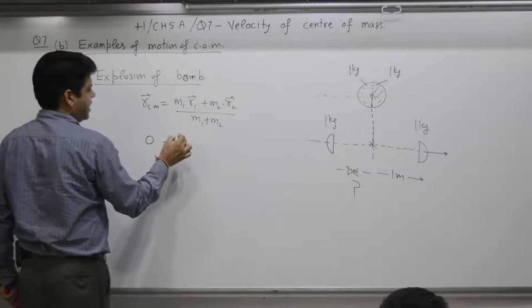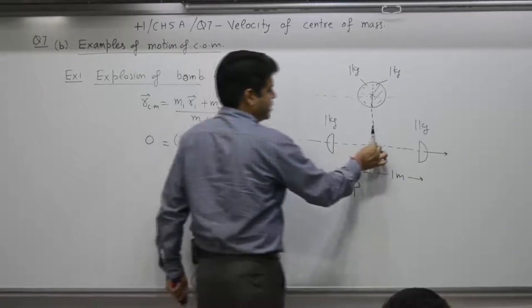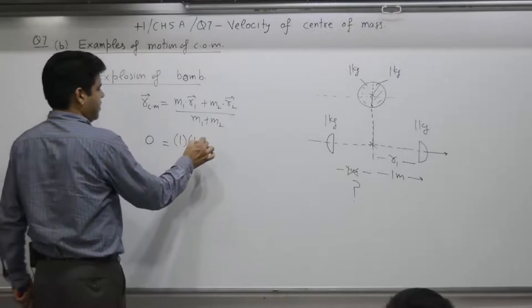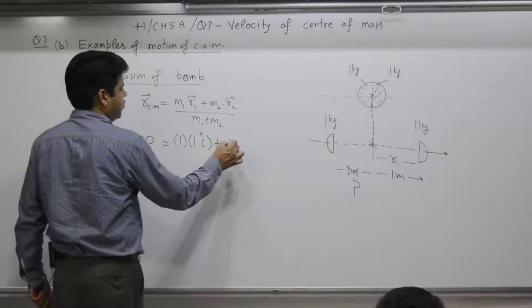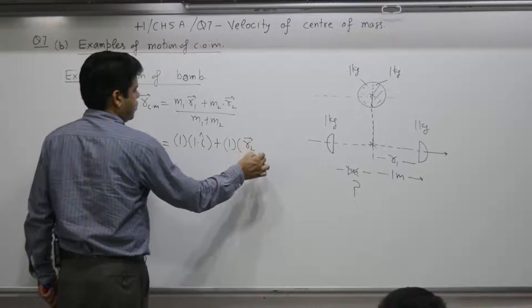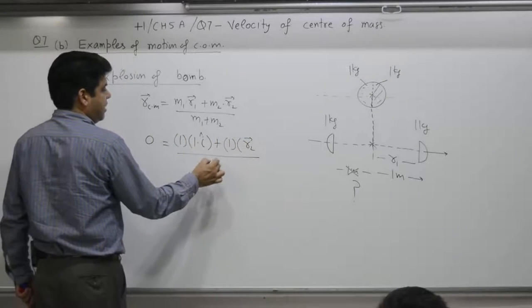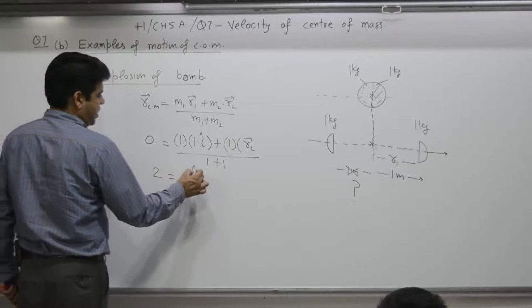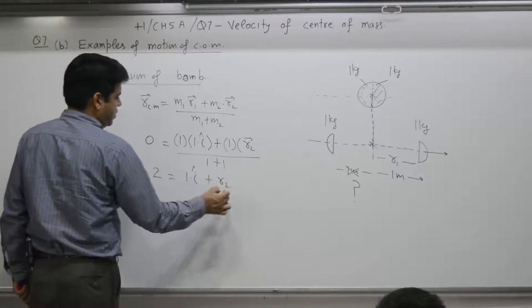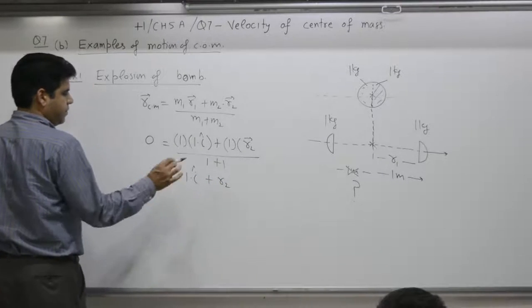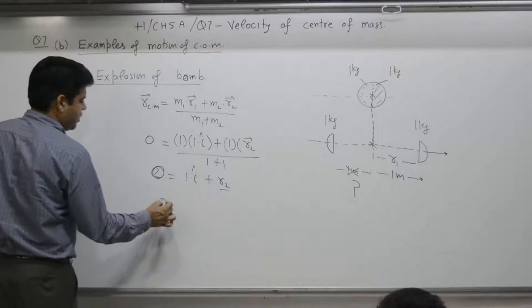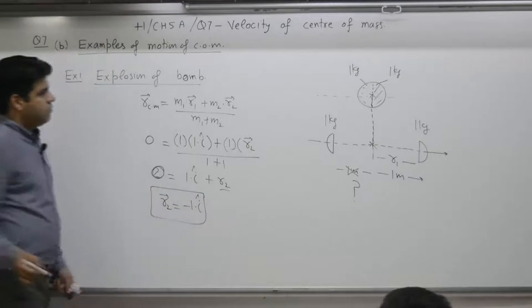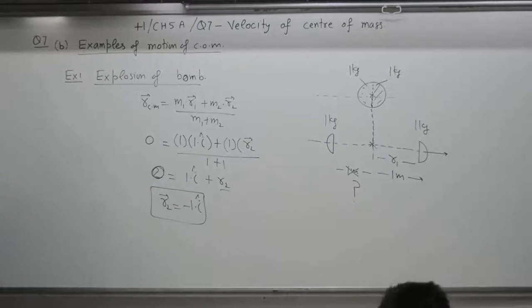M1 is 1 kg. R1, this particle has moved to the right, R1 is equal to 1 I plus M2 1 kg. R2, we do not know. R2 divided by 1 plus 1. What you get is 1 I plus R2 equals 0. So R2 is equal to minus 1 I. Three minutes with you to note.